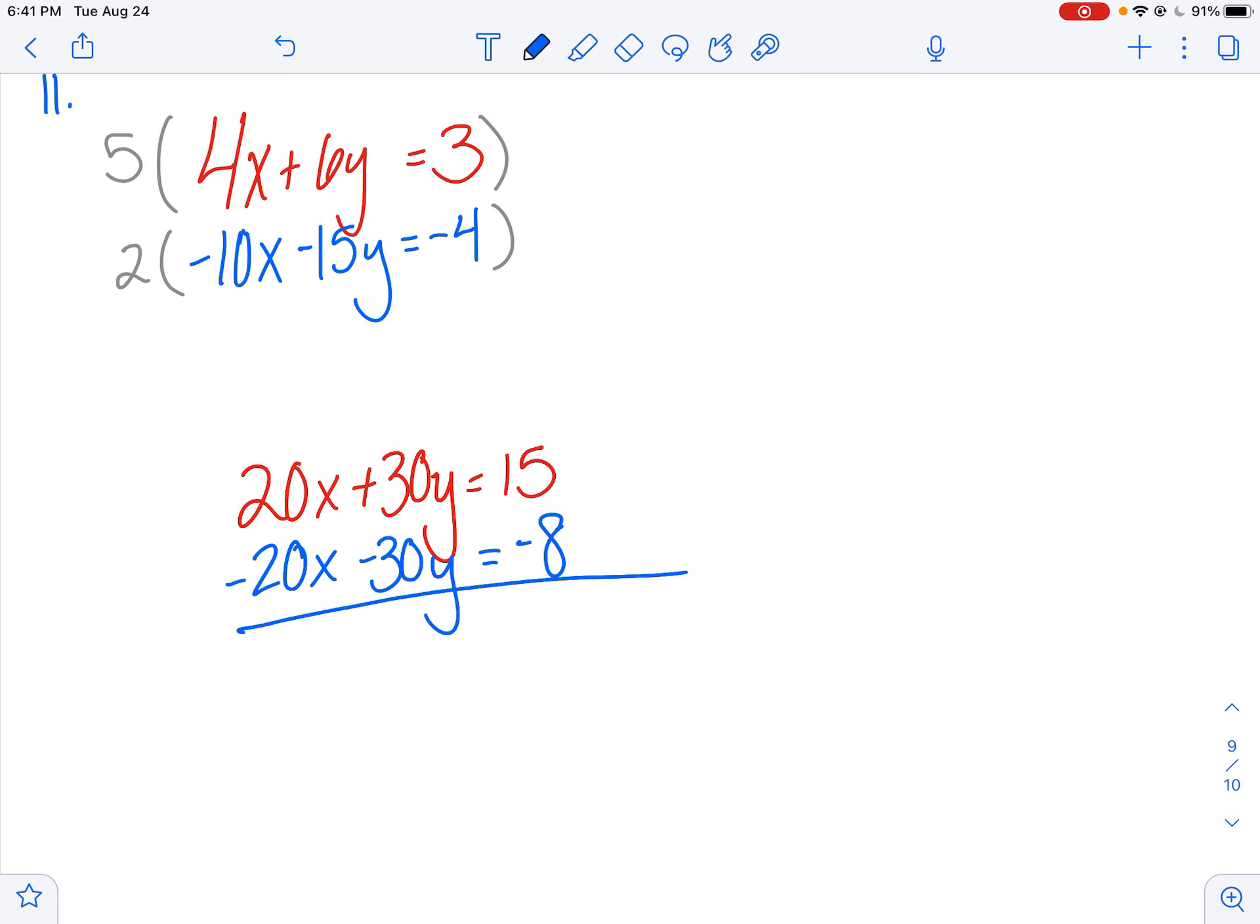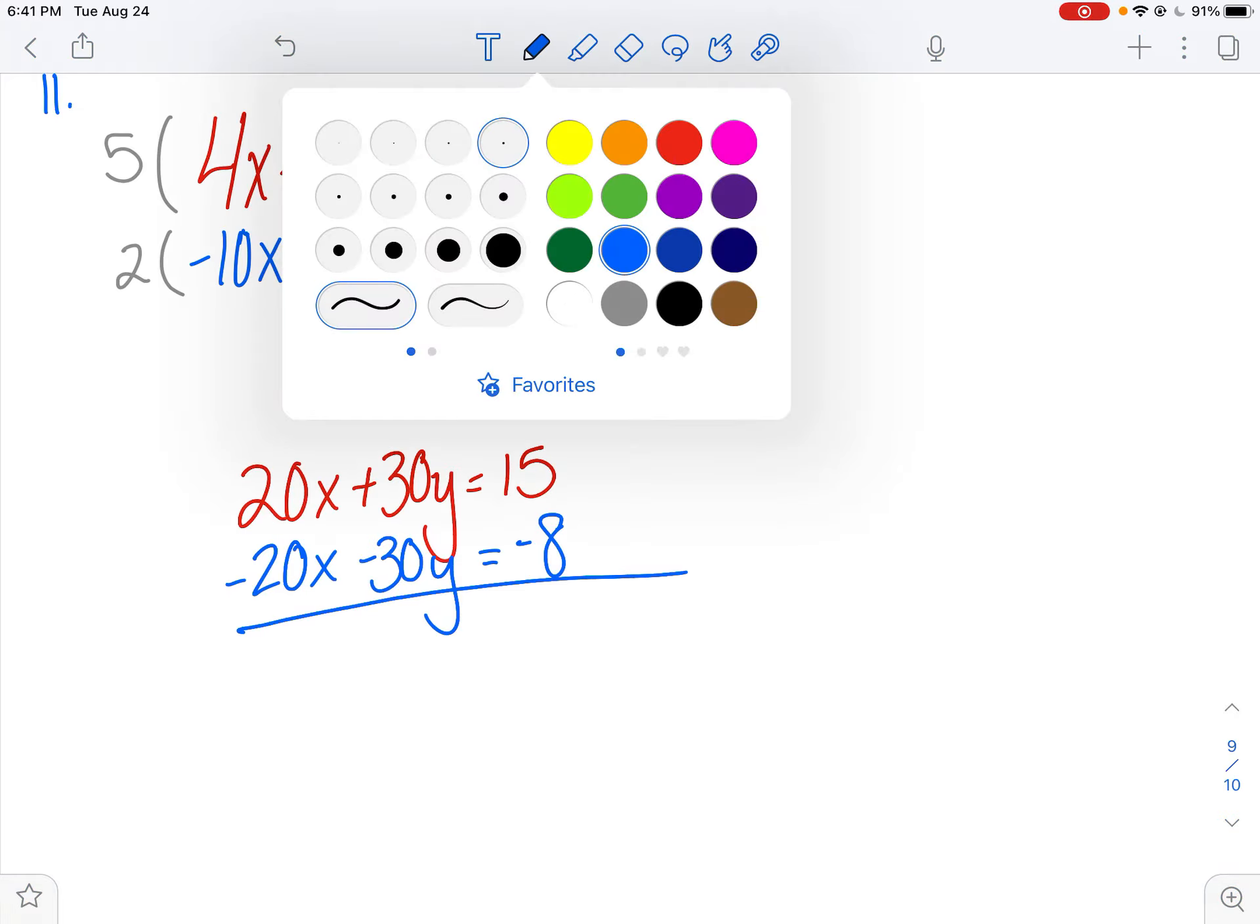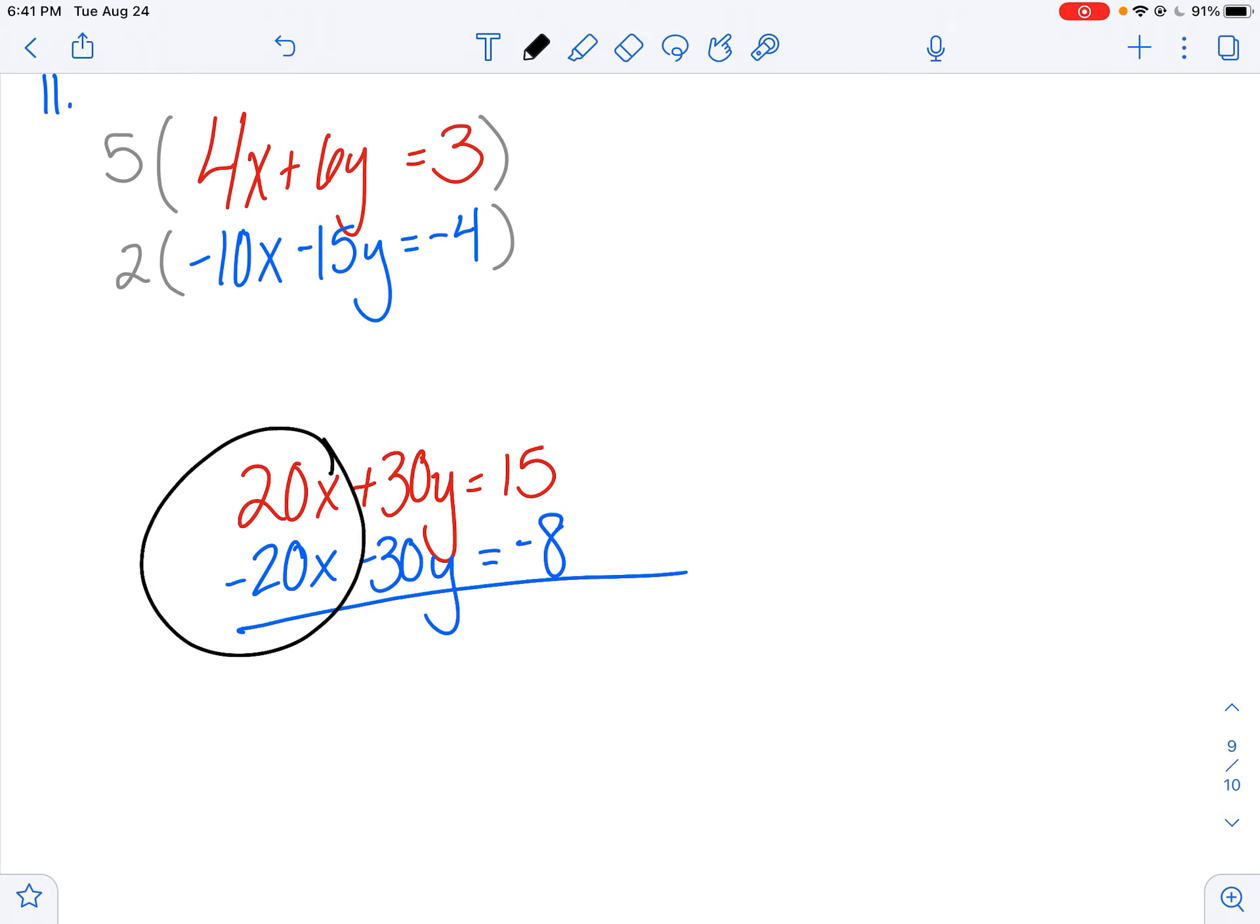Okay, kind of an interesting problem. And what we should notice here immediately is that the x's will reduce to 0. Those are gone. They eliminated each other. But kind of interesting here, so do the y's. So what I'm left with is 0. There's nothing there. Nothing on the left. And a 7.